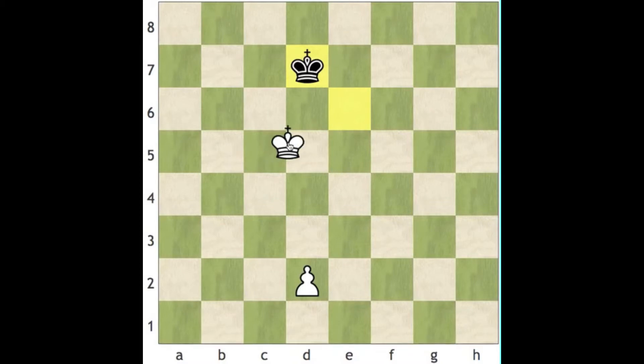Then we just repeat the process. King to d5. Let's say he moves to c7 this time. We move up to e6. And again now we've got d7 square. Our last goal would be to get d8.